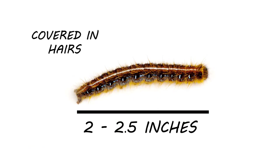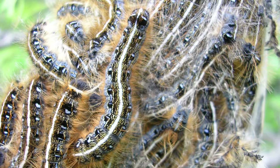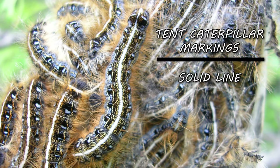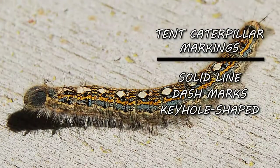They are typically hairy and dark colored, with a pattern of lines running down the lengths of their bodies. The pattern may include white markings depending on the species. Some have a solid white line that goes from end to end. Some feature a dashed white line. Some feature keyhole shapes. And some do not feature white markings at all.